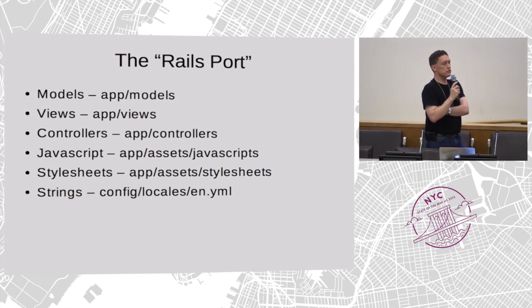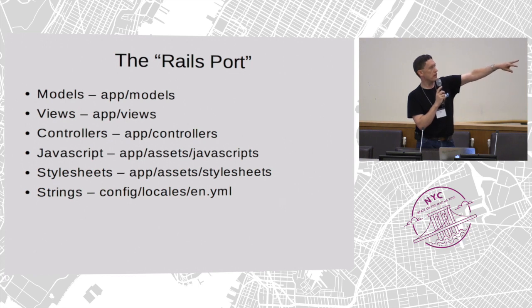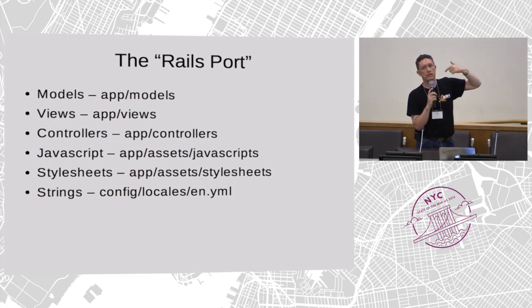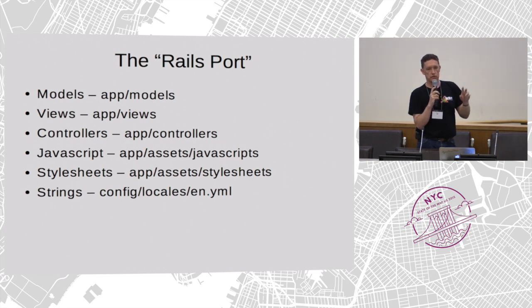All the text that the user sees needs to be translatable. So if you're adding user-visible strings, don't put the string in the code — put it in the English locale file only. The translation is all done later using Translate Wiki, so we just put them in the English file to start with, then reference those in the code. There's a little function called T that you give a resource ID and it will pull it out of that file.